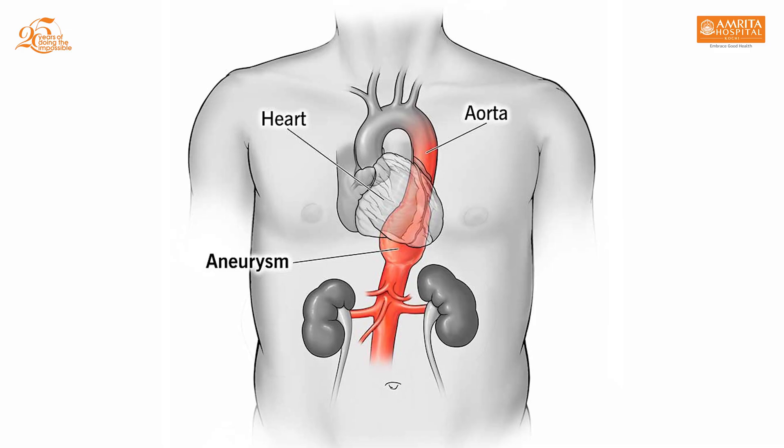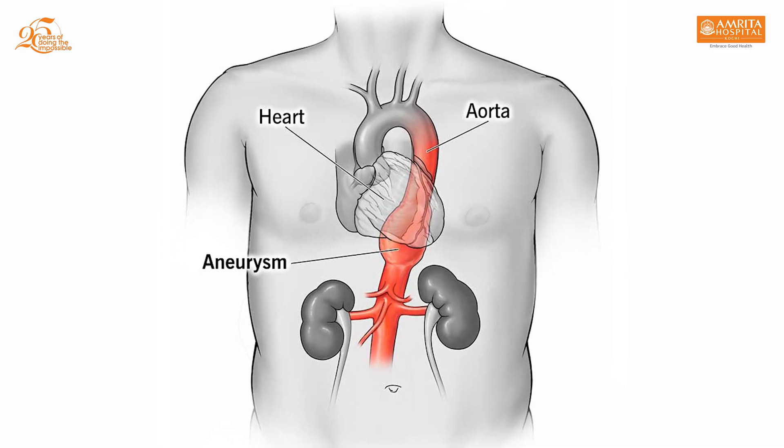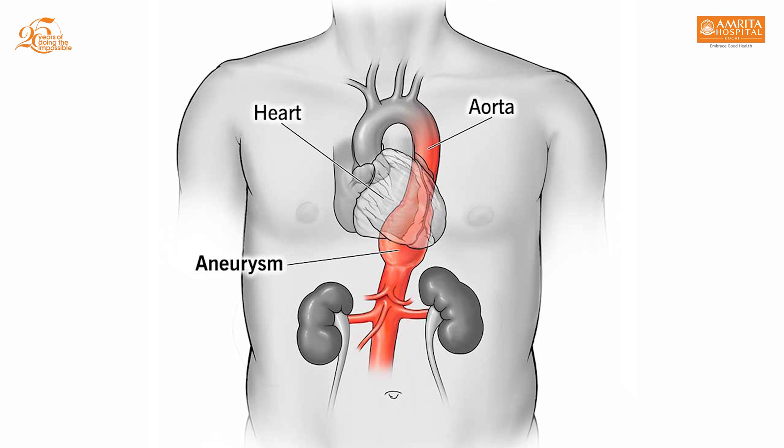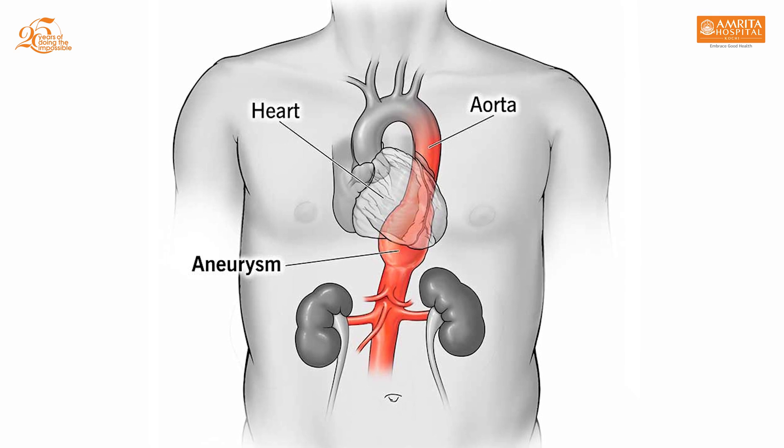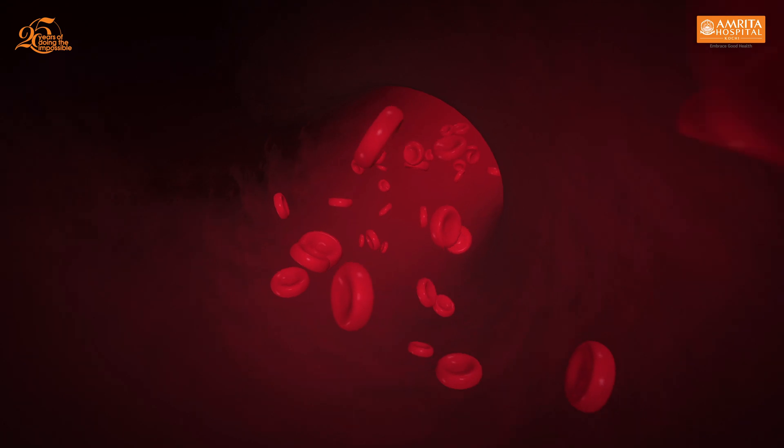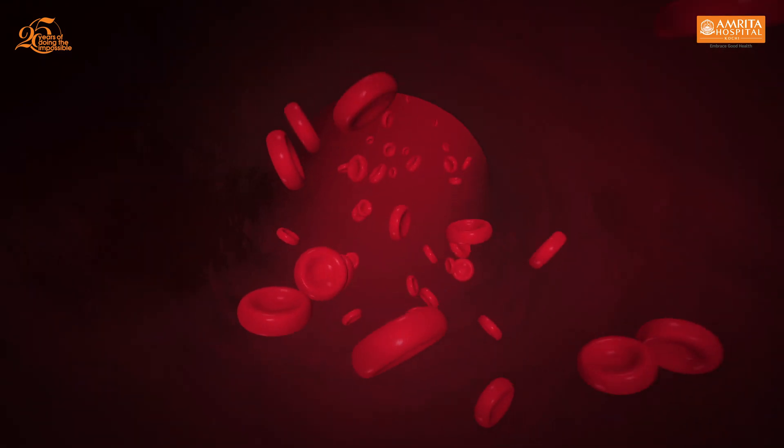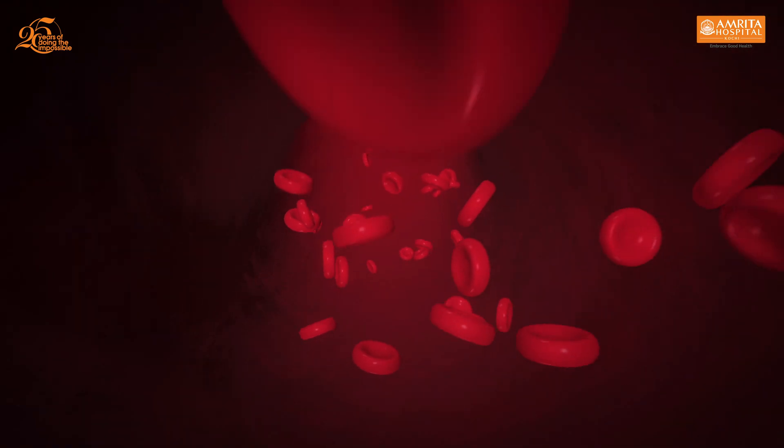The aorta is the main blood vessel of the human body, arising from the heart, traveling through the chest down into the abdomen, and ending as two branches which supply both legs. The purpose of the aorta is to supply blood to the whole body through its branches, and hence to sustain life.